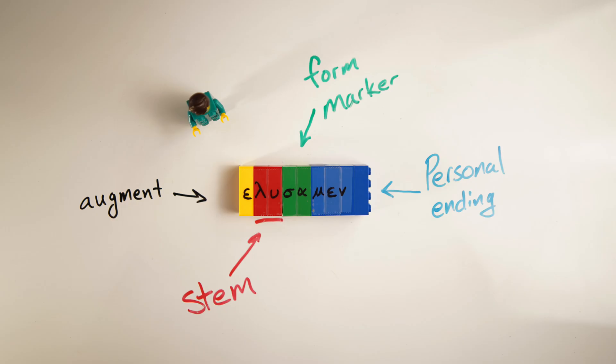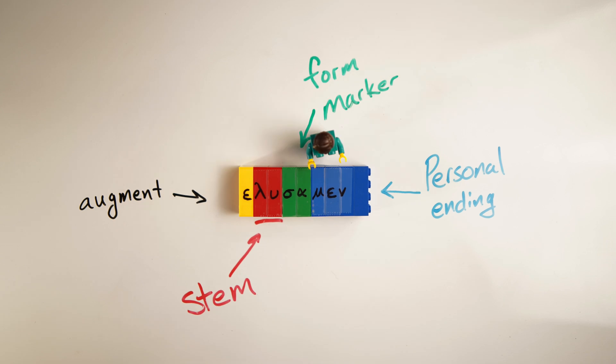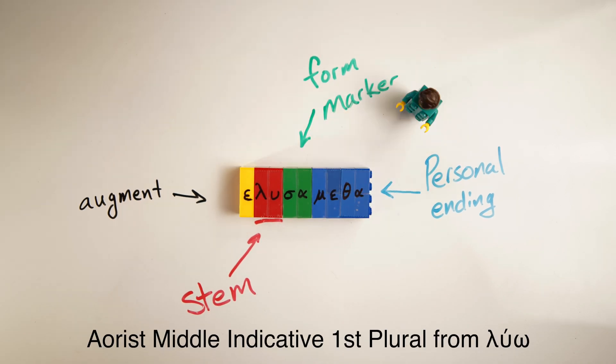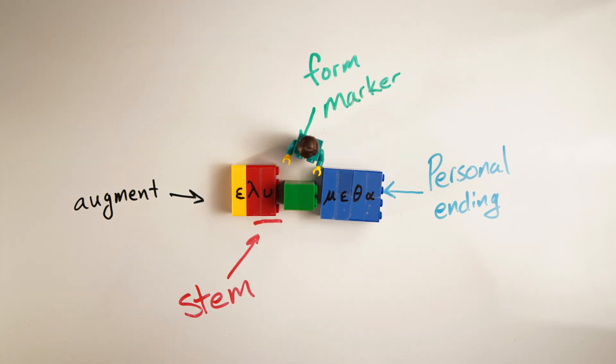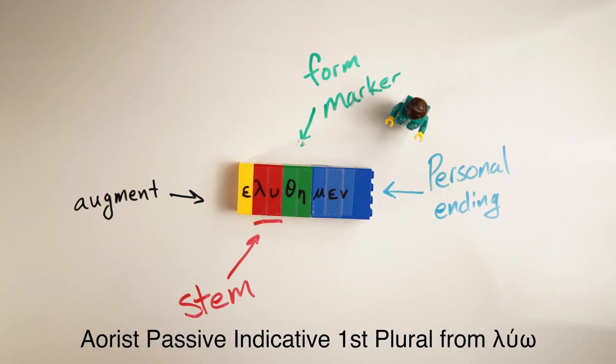What about if we wanted an aorist middle indicative verb? We would keep the same elements — the epsilon augment and the stem — and we'd also keep that sigma-alpha form marker, but we would need the middle personal endings. So we would need to change those blue bricks on the end for the personal endings. And then if we wanted an aorist passive indicative verb, we would again keep that epsilon augment and the same stem, but instead of the sigma-alpha form marker, we'd replace it with the theta-eta form marker and change the personal endings back to what are, for the most part, the same endings as the aorist active.